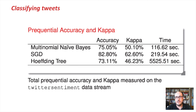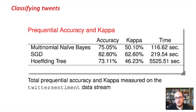In this data stream, if we compare accuracy and kappa for the multinomial Naive Bayes, stochastic gradient descent, and Hoeffding tree classifiers, we can see that stochastic gradient descent performs better — but this may not apply to other data streams. What is very interesting is that in data stream mining, we should always not only look at accuracy, but also at resources: time and memory.